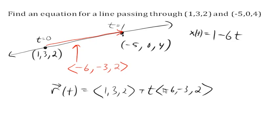For y, my y value starts at 3 and it decreases by 3 for each t. And z starts at 2 and increases by 2 for each t.